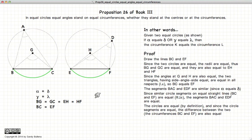So, thus we have demonstrated that if we have two equal circles, if the angles at G and H are equal, or if the angles from A and D are equal, then the circumference will also be equal.